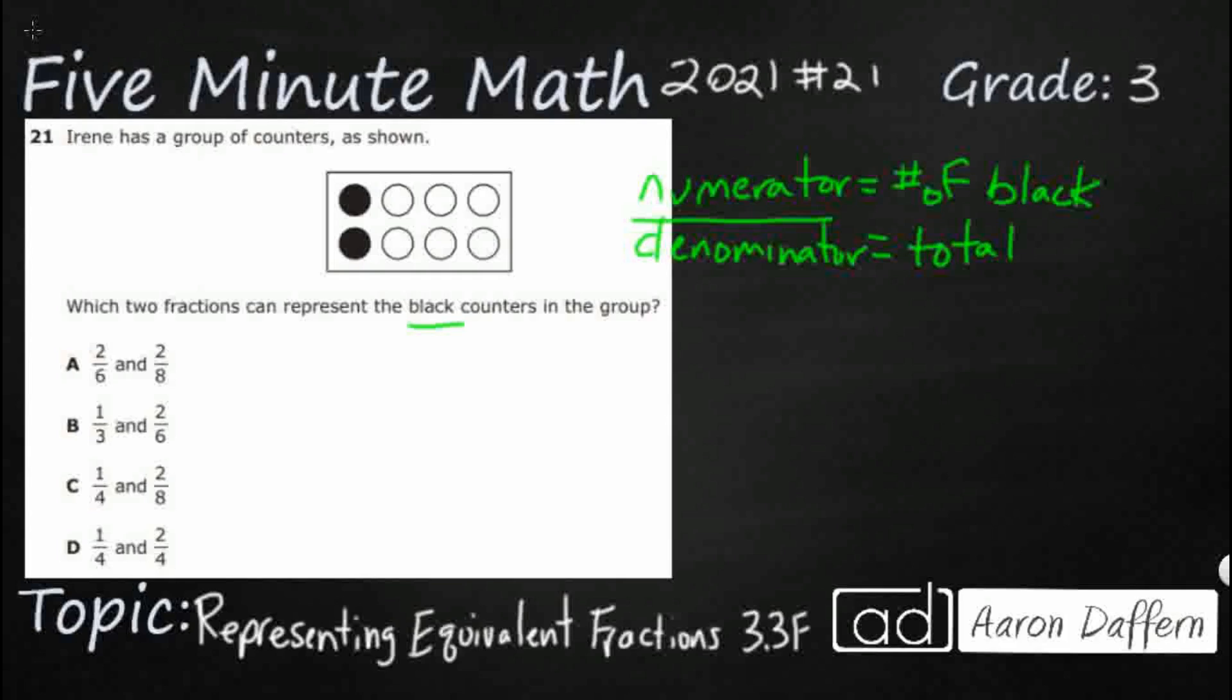So let's just count them out here. I've got 1, 2, 3, 4, 5, 6, 7, 8. So here's my fraction. I've got two black counters out of eight total.